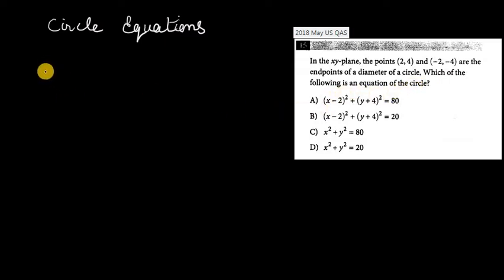Let's just remind ourselves what we need to write down the equation of a circle and what is the equation of a circle. So the equation of a circle, or at least the standard form of the equation of a circle, is (x - h)² + (y - k)² = r².